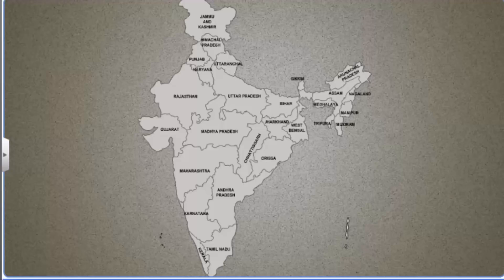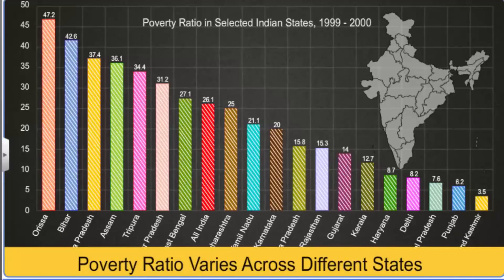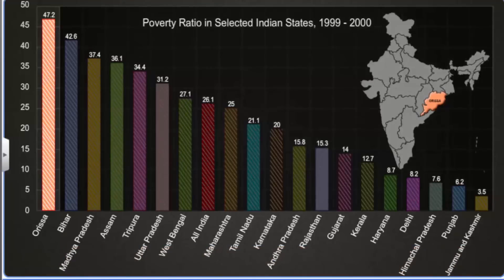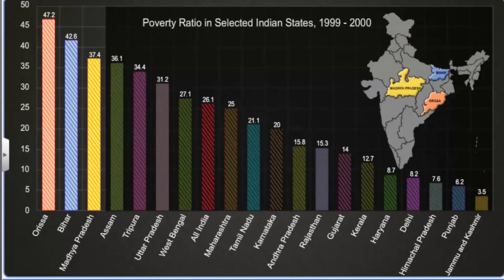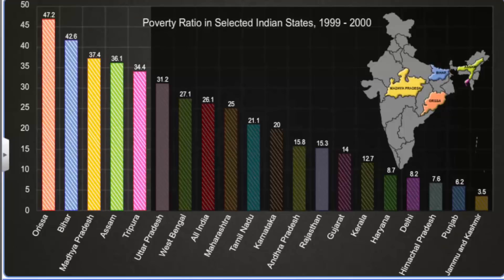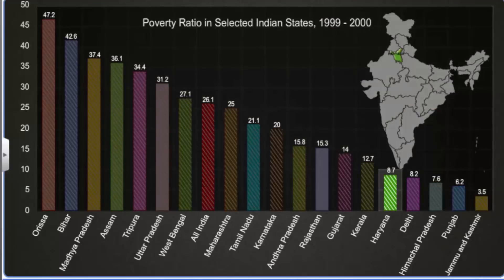Poverty is a problem in all 28 states and 7 union territories of India. However, the poverty ratio is not uniform all over the country. Orissa with a poverty ratio of 47% and Bihar with 43% are the two poorest states in India. Madhya Pradesh, Assam, Tripura and Uttar Pradesh also have poverty ratios much higher than the all-India ratio of 26.1%. At the other end, the states of Haryana, Himachal Pradesh, Punjab and Jammu and Kashmir, along with the Union Territory of Delhi, have the lowest poverty ratios in the country.